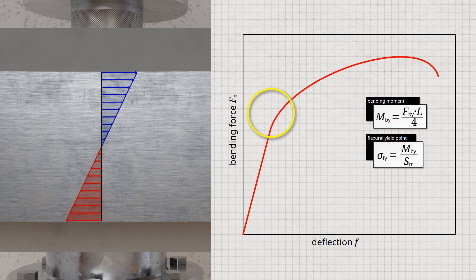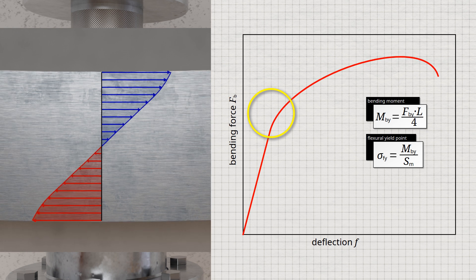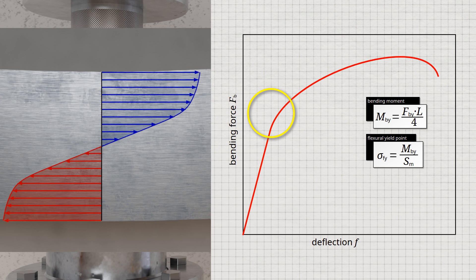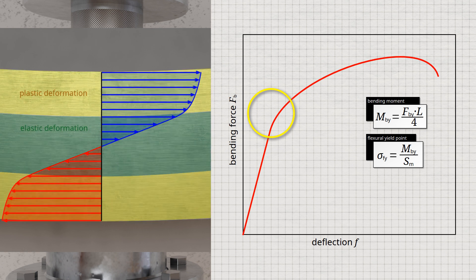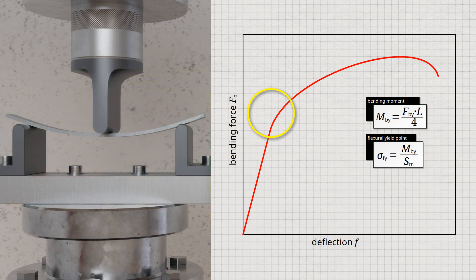Due to the linear stress distribution in the specimen cross-section, the areas further inside the material are not involved at once in the flow process, but gradually with increasing deflection. Thus, it is not a sudden onset of the flow process across the entire cross-section but a gradual involvement. This also leads to the flexural yield point being usually about 10 to 20% higher than the yield point obtained in the tensile test. If the tensile yield point is exceeded at the surface, the areas still purely elastically stressed further inside obstruct the plastic deformation, so the flow process begins at higher stress values. For materials without an obvious yield point, a 0.2% flexural offset yield point sigma-f-y-0.2 can be defined, analogous to the 0.2% offset yield point of the tensile test.